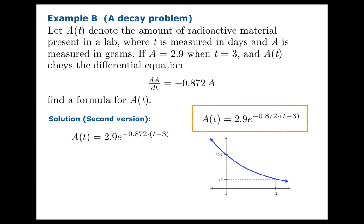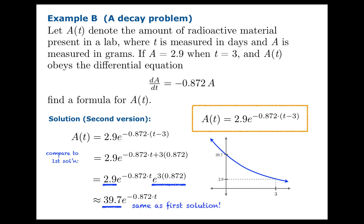Now, the claim is this gives us exactly the same function. But maybe we should check a little bit just to compare. So if you're not quite sure about this, why don't you try writing it out? So we're going to expand the exponent. And you get that expression. And you can work out e to the 3 times 0.872 and 2.9 and multiply those together, you'll get 39.7. And indeed, this formula is the same as the original. And we have just a different expression for the same function.